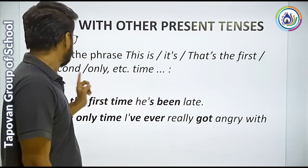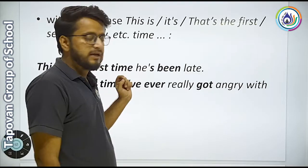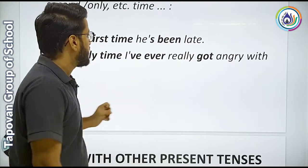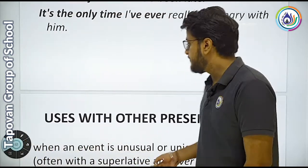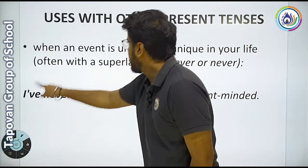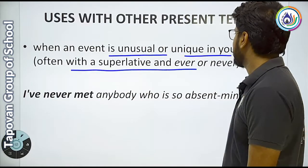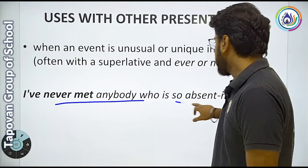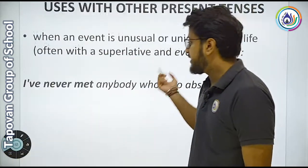Use with phrases: This is / It's — that's the first, second, only, etc. — time. Example: This is the first time he has been late. It's the only time I have ever really got angry with him. ये पहला time है जब मैं उसके साथ बहुत ज़्यादा angry हो गया. When an event is unusual or unique in your life — often with the superlative and ever or never. Example: I have never met anybody who is so absent minded. मैंने ऐसे किसी से नहीं मिला जो बहुत ज़्यादा absent minded हो.